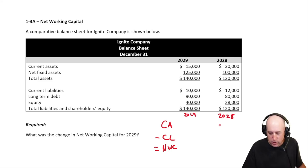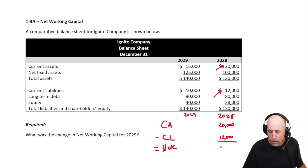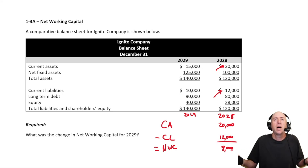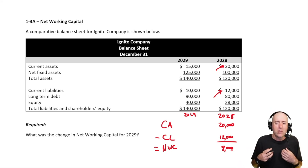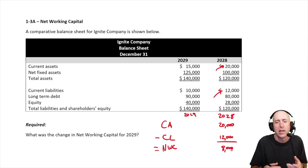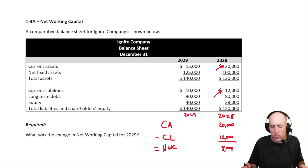For 2028, current assets are $20,000 and current liabilities are $12,000, so the net working capital is $8,000. It's essentially a measure of how much money you have to work with — if you sold all your current assets and paid off all your current debts, how much would you have left? It's a useful number to know.